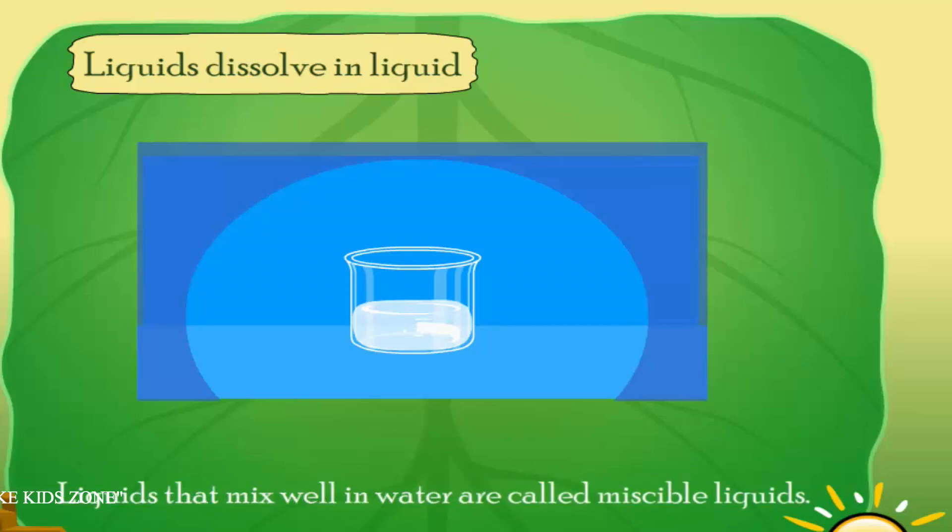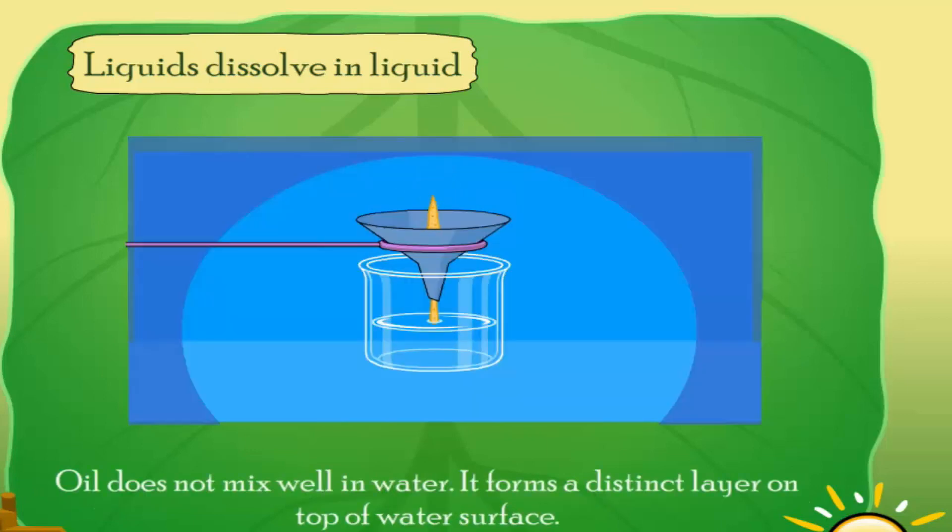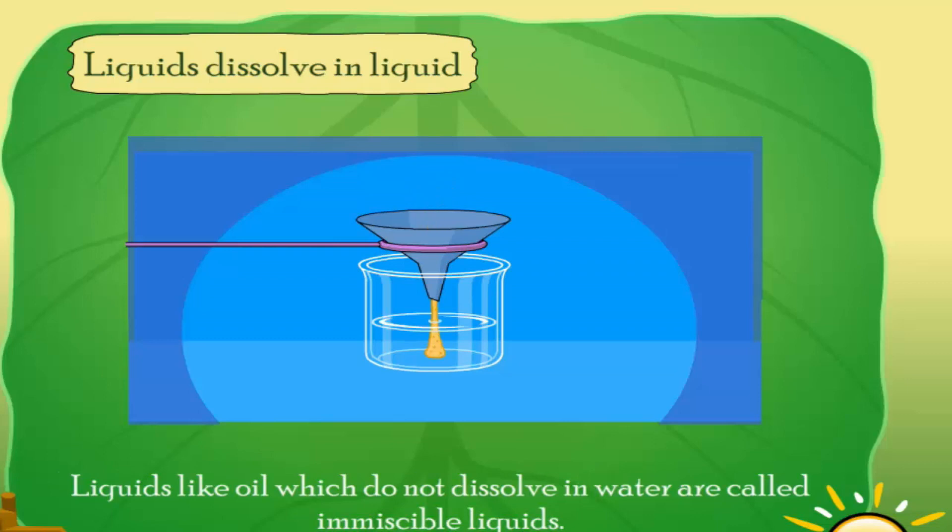Oil does not mix well in water. It forms a distinct layer on top of the water surface. Liquids like oil which do not dissolve in water are called immiscible liquids.